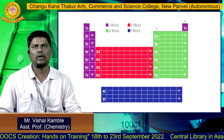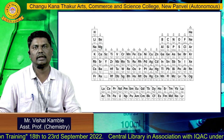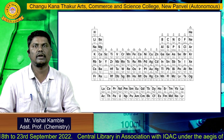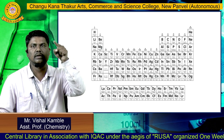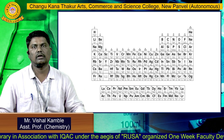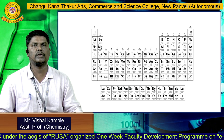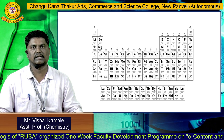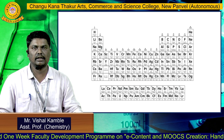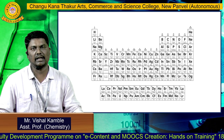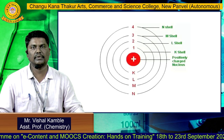For example, lithium is an s-block element because its atomic number is 3 and its electronic configuration is 1s² 2s¹ — the last electron enters the s subshell. Carbon, with atomic number 6, has configuration 1s² 2s² 2p², making it a p-block element. Scandium's last electron enters a d subshell, making it a d-block element. The lanthanoid and actinoid series complete the f-block.